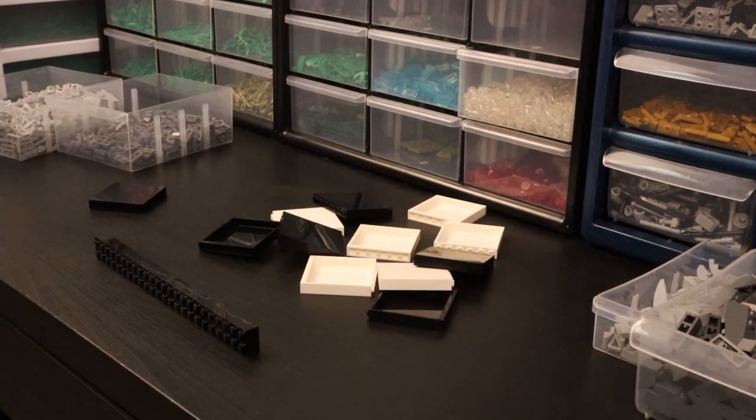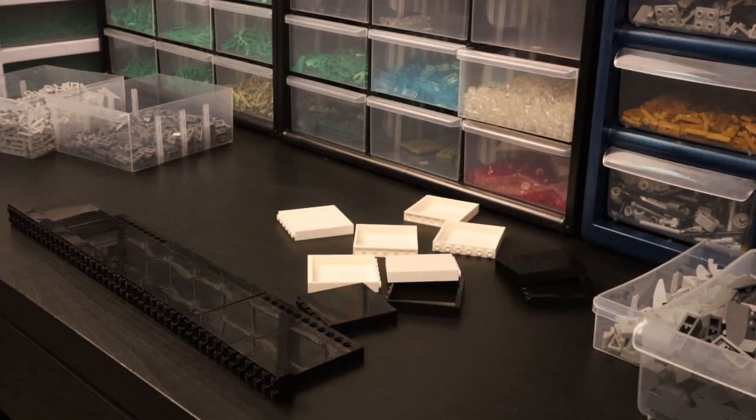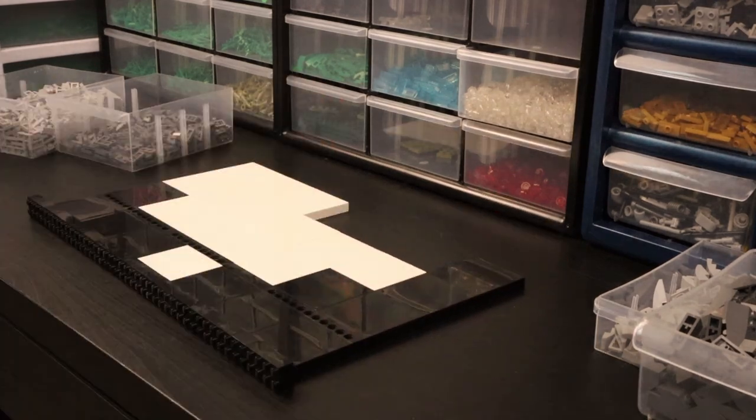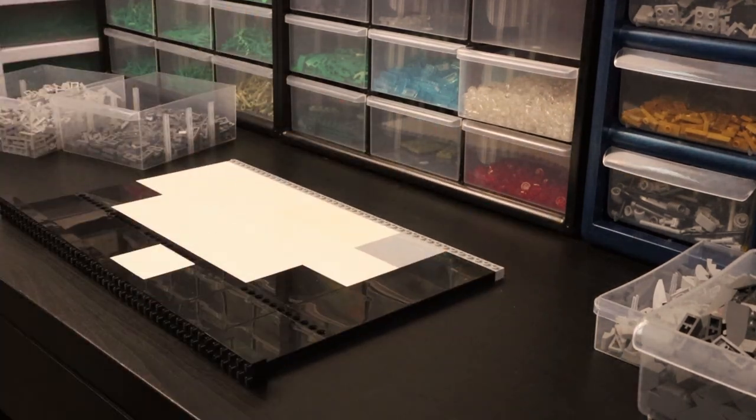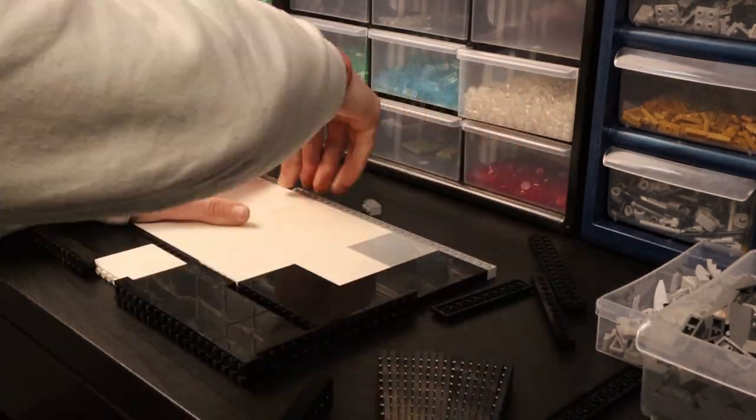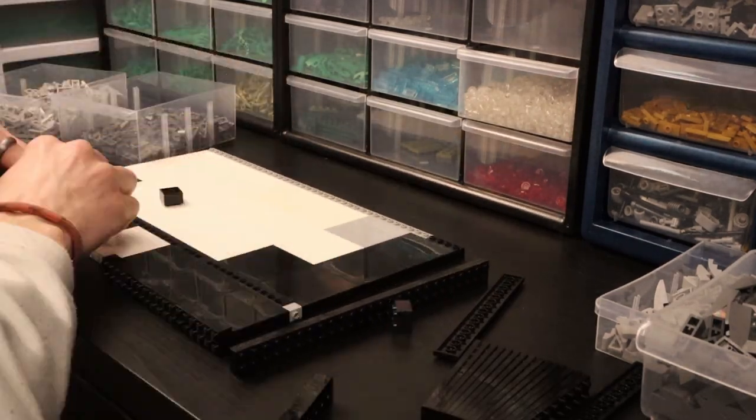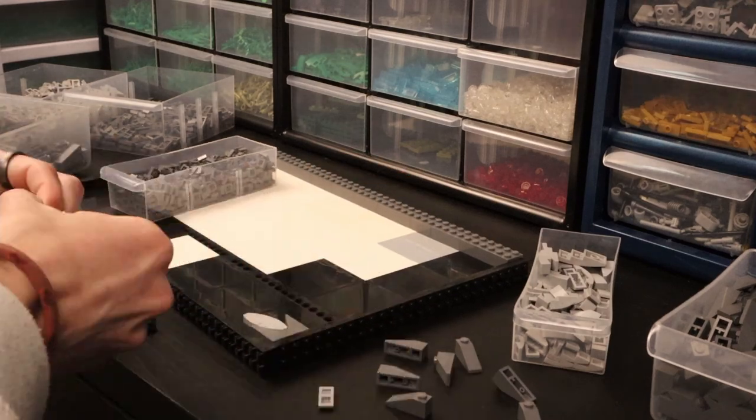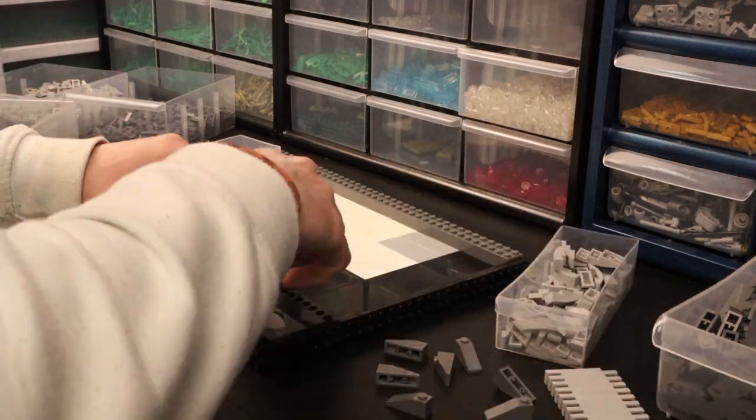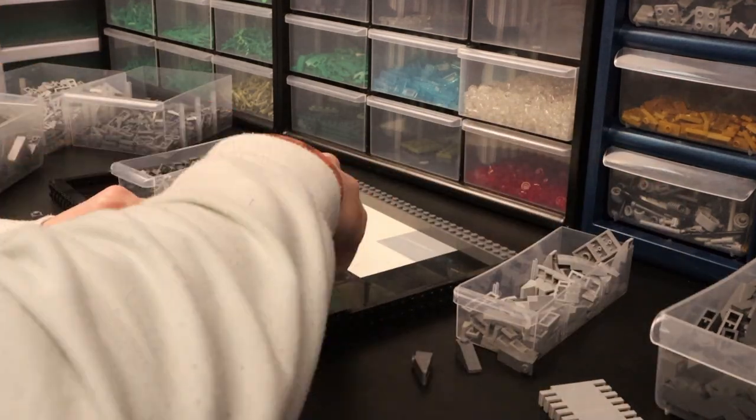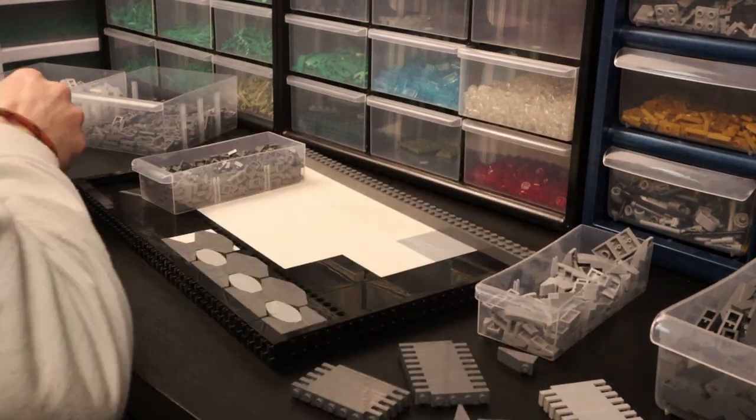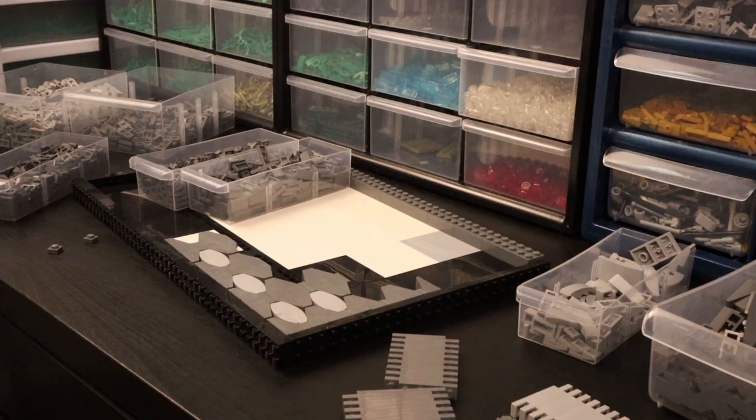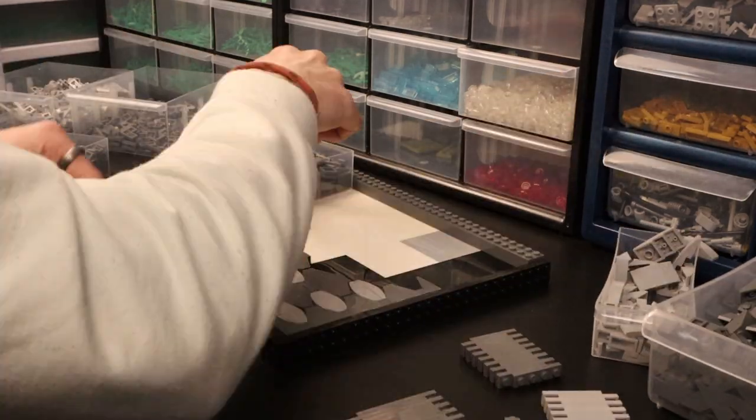So I started by making a big SNOT base with a bunch of big bricks and obviously some black around the front and the sides because I wanted to have a black border to just finish off the completed look. And then I went ahead and started making the design for the floor tiles. And I used light bluish gray curved slopes and made some ovals and then outlined it with the dark gray slopes.